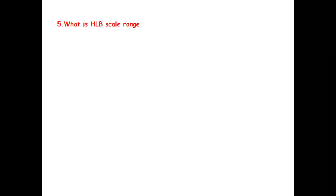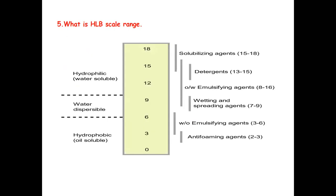What is the HLB scale range? The HLB scale ranges from 0 to 18. Anti-foaming agents have a range of 2 to 3. Emulsifying agents for W/O emulsions have HLB 3 to 6. Wetting and spreading agents are 7 to 9. Emulsifying agents for O/W emulsions are 8 to 16. Detergents have HLB 13 to 15, and solubilizing agents have HLB 15 to 18.